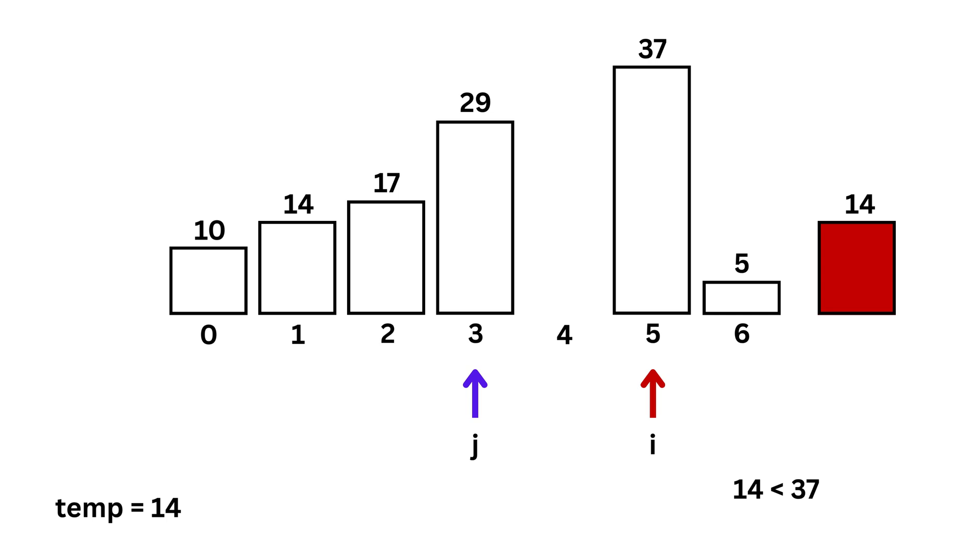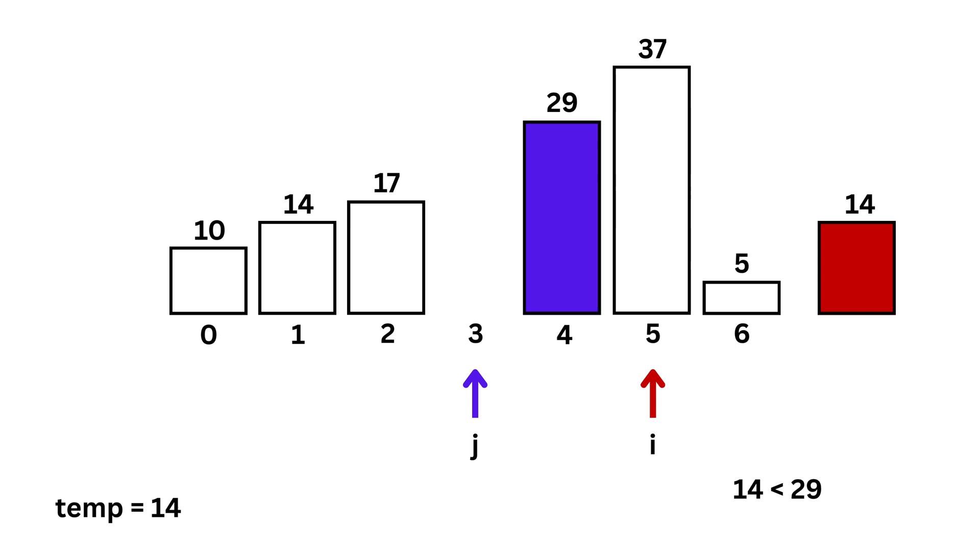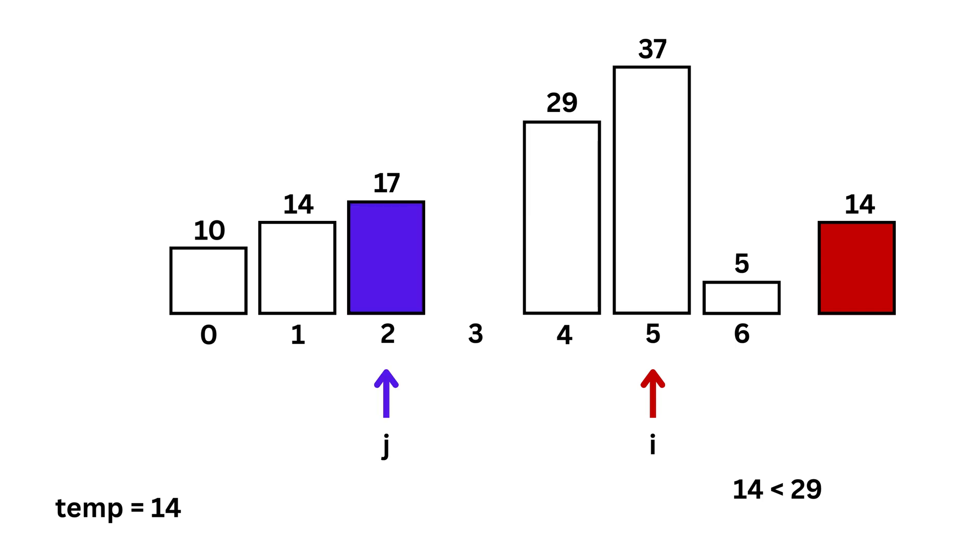Then, j becomes 3, pointing to 29. Again, shift it to the right. Then, j becomes 2, pointing to 17. Shift again to the right.